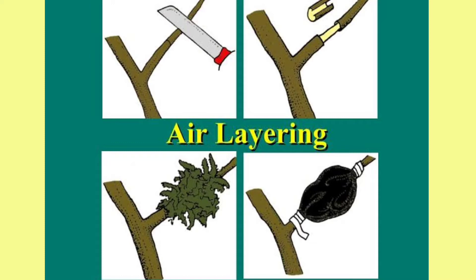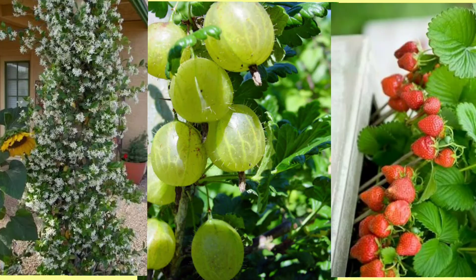The plants which can be grown by mound layering include jasmine, strawberry, gooseberry, etc.